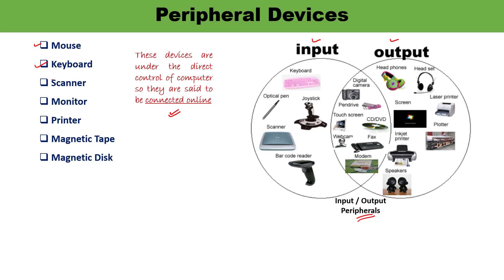Keyboard is a very common and important input device. We can enter letters, numbers, and symbols using it. Whenever we press a key on a keyboard, the keyboard sends a unique signal to the computer. The processing unit receives the signal and translates it to determine which letter, number, or symbol is being entered by the user.